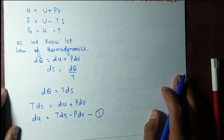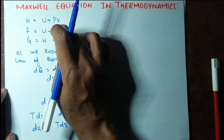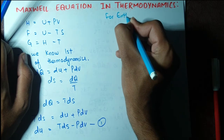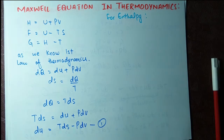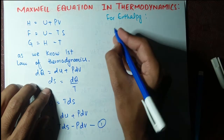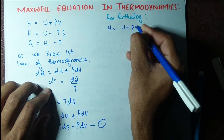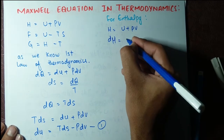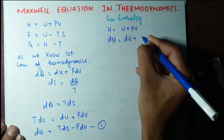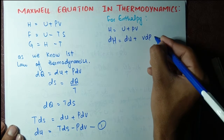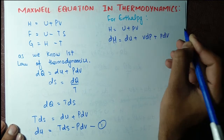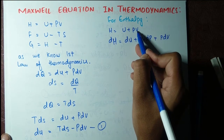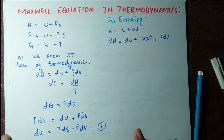Now for enthalpy: H equals U plus PV. Taking the differential, dH equals dU plus P dV plus V dP, applying the product rule — derivative of the first times the second plus derivative of the second times the first.